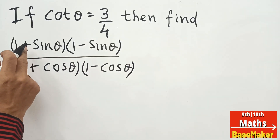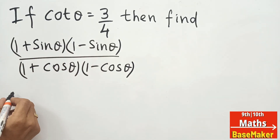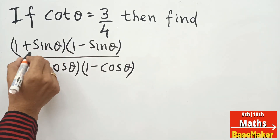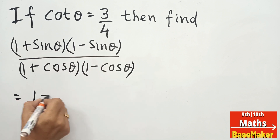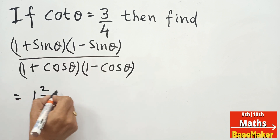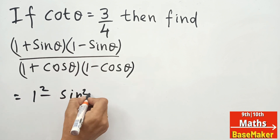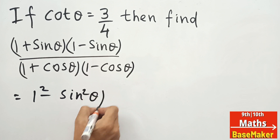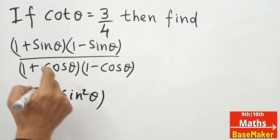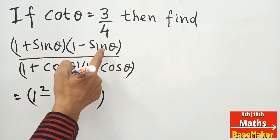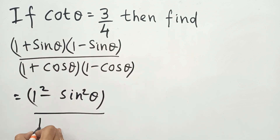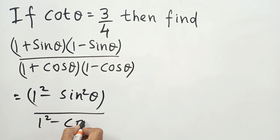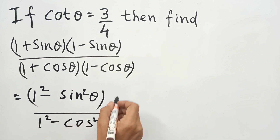First we will solve this. Multiply this. So we get 1 squared minus sin squared θ in the numerator. We will use the (a + b)(a - b) identity here. For the denominator also, we get 1 squared minus cos squared θ.